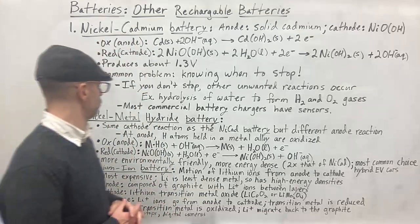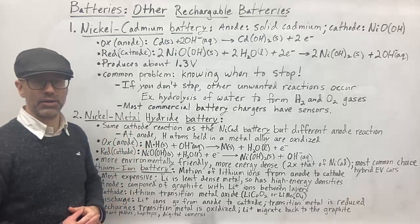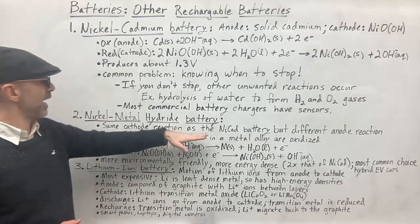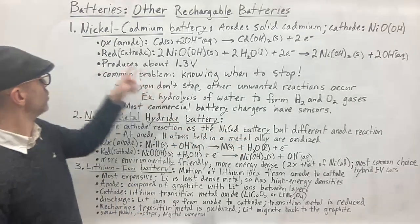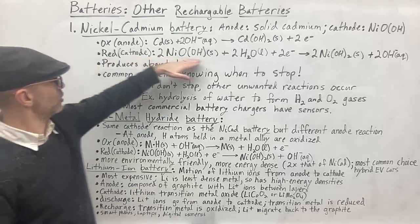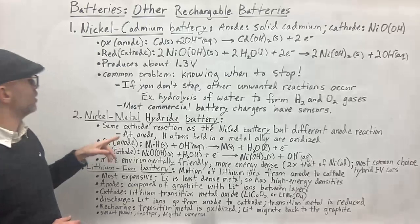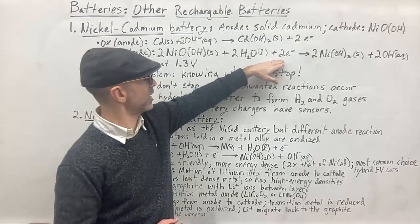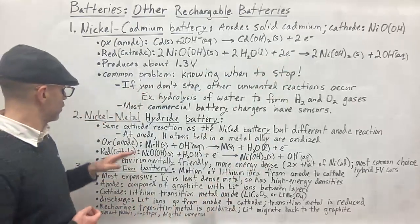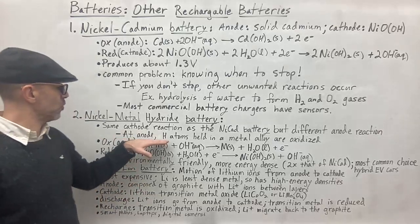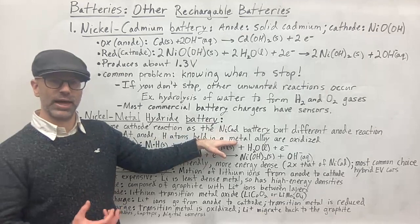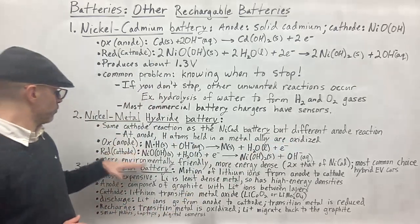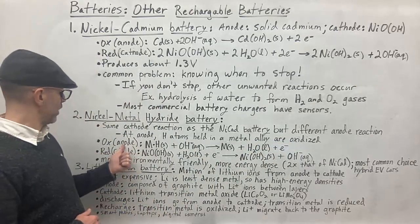Your nickel cadmium battery is the first one. And then the second one is your nickel metal hydride battery. Now the nickel metal hydride battery has the same cathode reaction as the nickel cadmium battery. So here you have your cathode. And so the same reaction occurs here. The only difference here is that instead of two electrons being taken, you got one electron being taken. And so the main difference is going to be at the anode, where you have hydrogen atoms that are held in a metal alloy. So they're in the metal alloy and those are going to be oxidized. And so here are the reactions at the oxidation reduction.